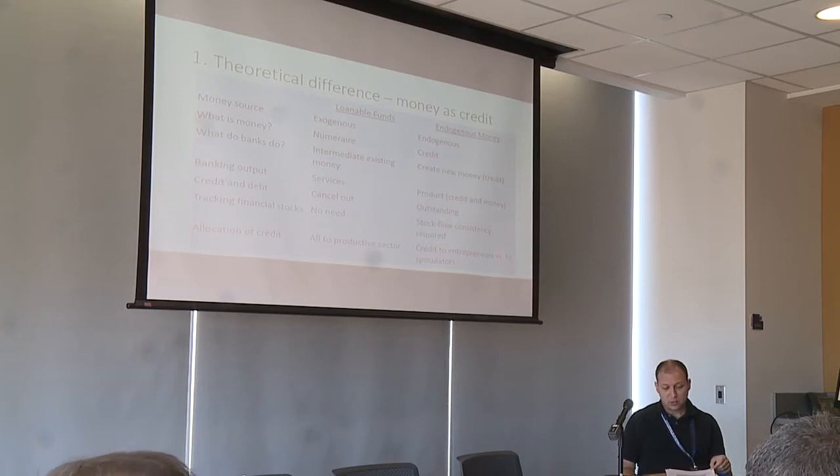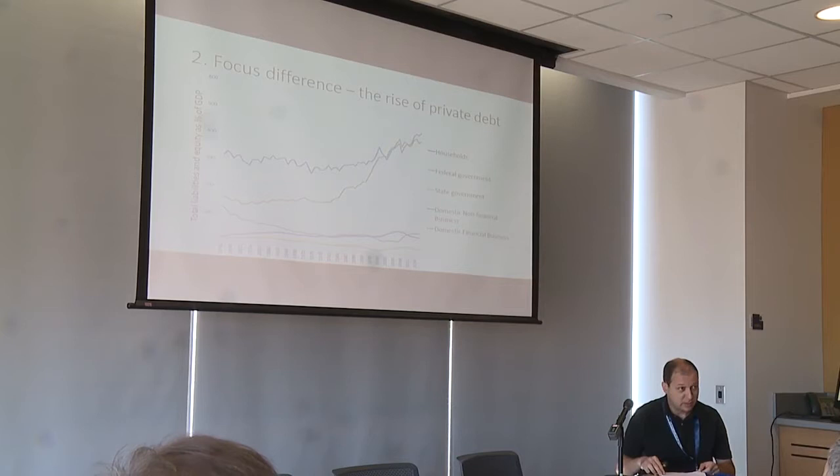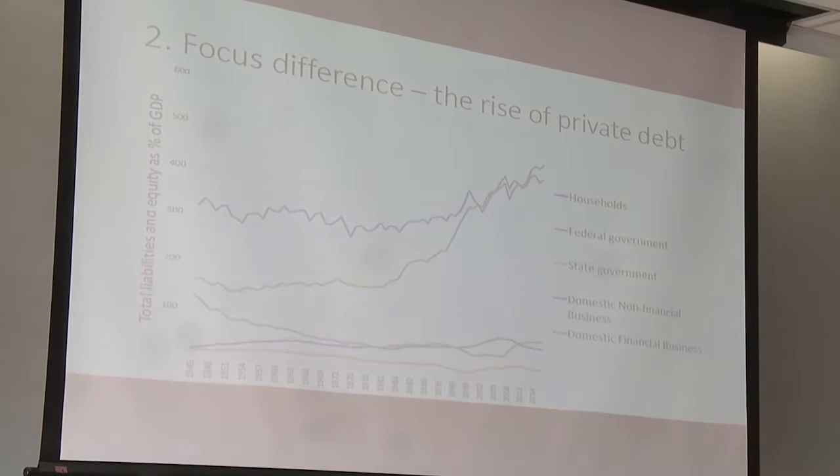In terms of data, this is the same data Steve used from the S tables of the flow of funds. There's a lot of hysteria about public deficits, but if you look at the chart, private debt — including financial debt, which is really rising high — is much bigger as a percentage of GDP. That's what those economists who saw the crisis coming focused on.